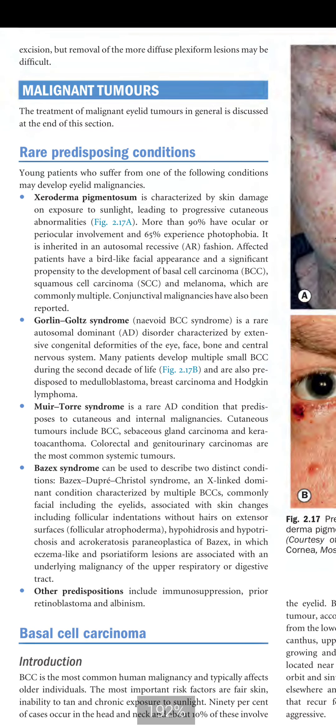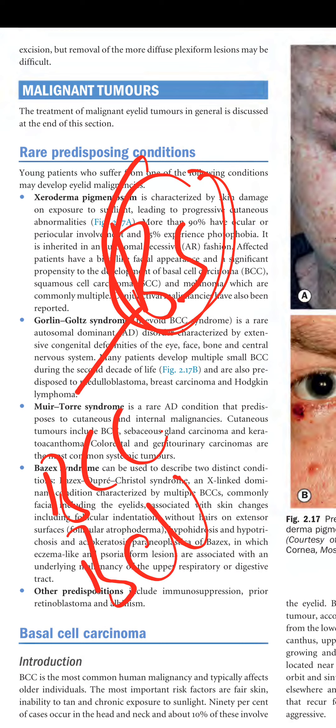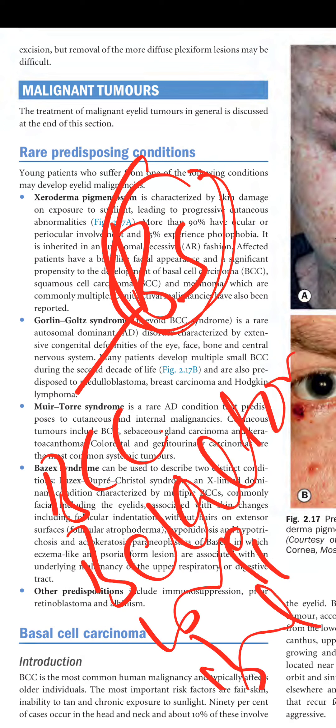Gorlin-Goltz syndrome, which is nevoid BCC syndrome, is a rare autosomal dominant disorder characterized by extensive congenital deformities of the eye, face, bone, and central nervous system. Many patients develop small multiple BCCs during the second decade of life and are also predisposed to medulloblastoma, breast carcinoma, and Hodgkin lymphoma. A useful mnemonic uses the letter B: BCC, medulloblastoma, breast carcinoma, and Hodgkin B-cell lymphoma.